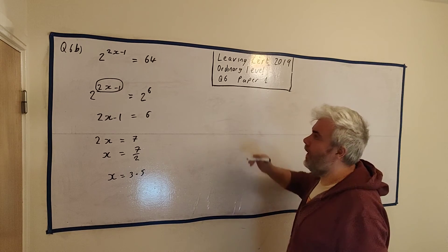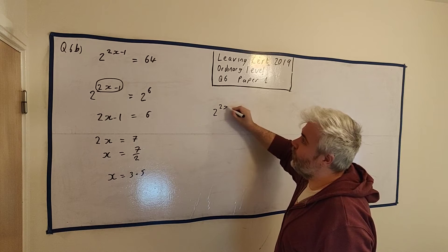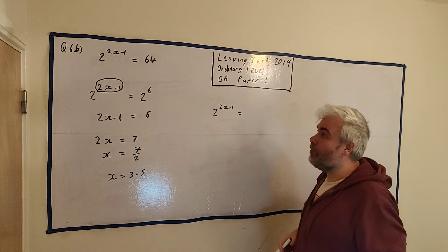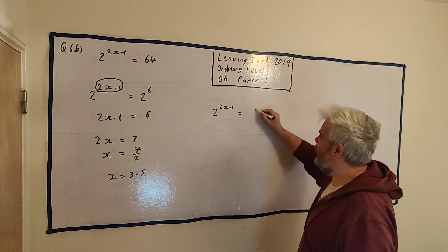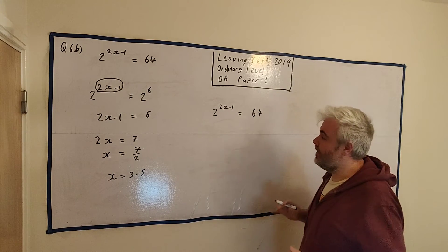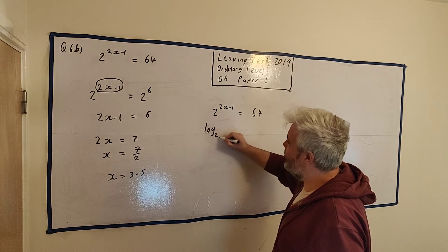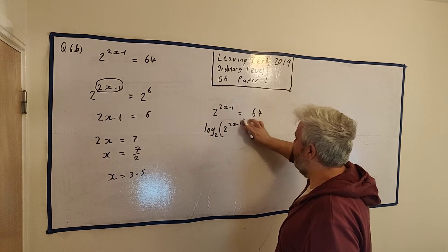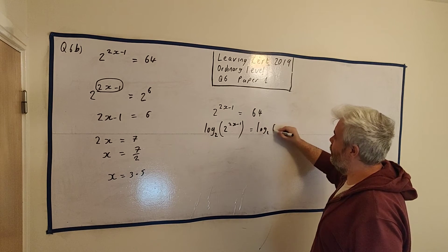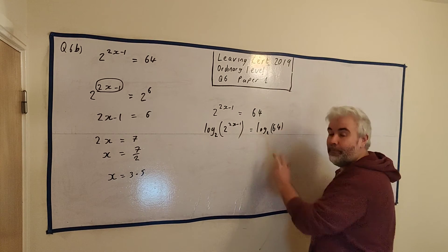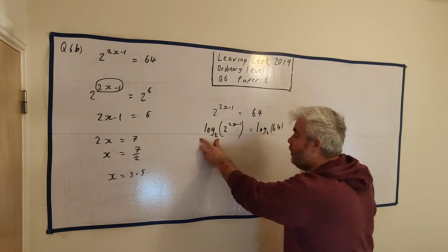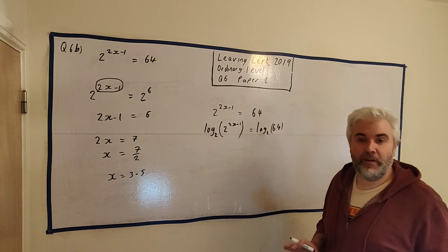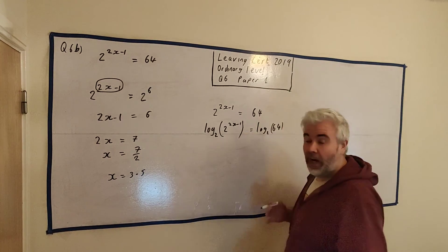This is more for an honors-level student would be able to do this. An honors-level student would maybe be asked this question instead of 64, it would be 63, and you need to do it this way. So here's another way to do it. You're able to use this thing called logarithmics. So the log to the base 2 of both sides here, 2^(2x-1), is equal to log to the base 2 of 64. Once we do the same thing to both sides, we're fine. If you're an ordinary-level student and you've never seen this before, do not worry. Stop the video now. We're finished. I'm just showing a different way.